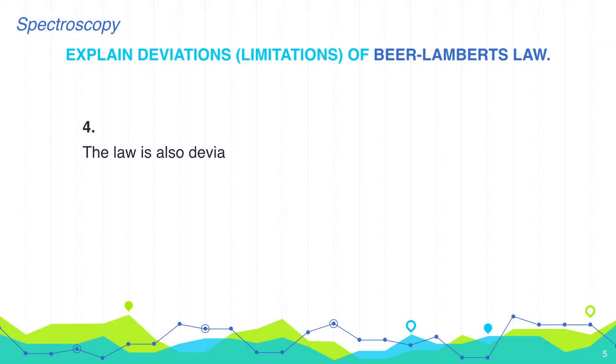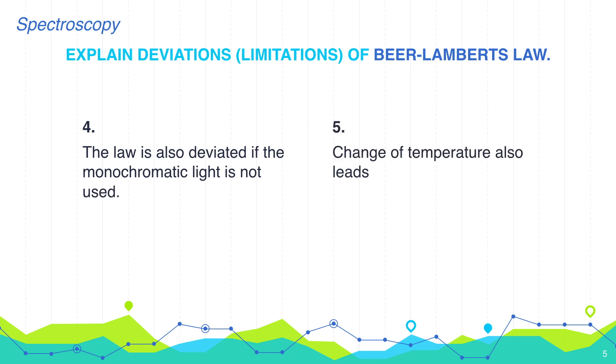Fourth, the law is also deviated if the monochromatic light is not used. Fifth, change of temperature also leads to deviation of Beer-Lambert's law.